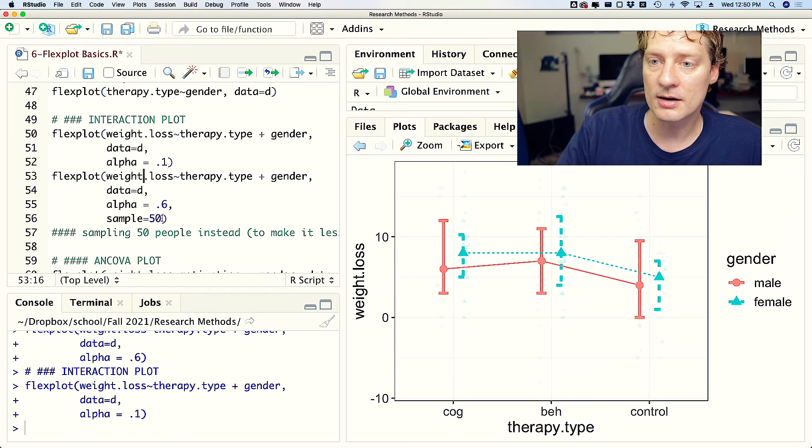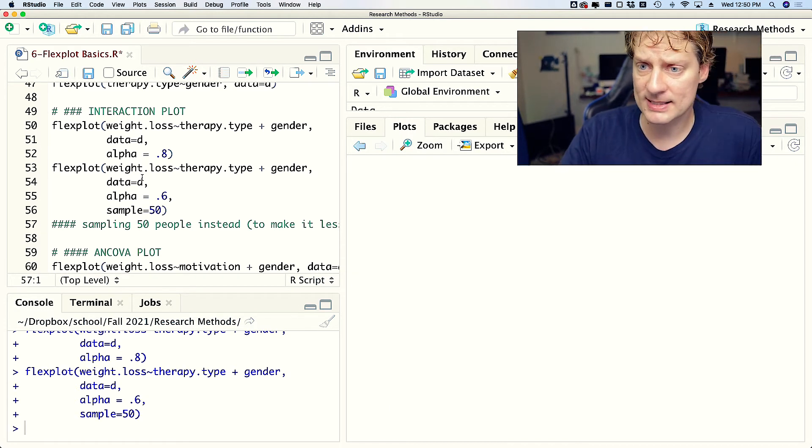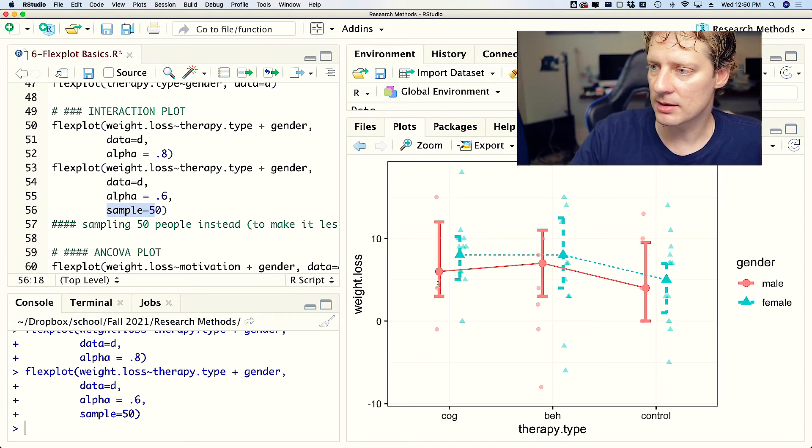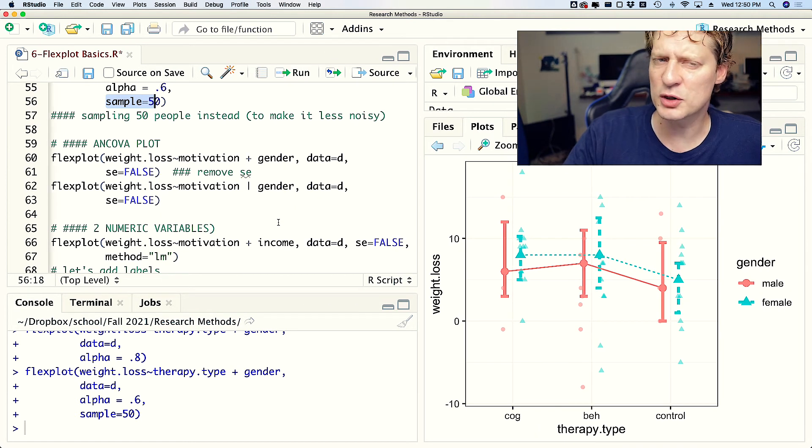Another argument is sample. There's a lot of data points, it tends to get messy, so one thing you could do is you could sample the number of data points by using the sample argument, and that will sample 50 from the entire sample and only display those, to make it less noisy or less visually noisy.